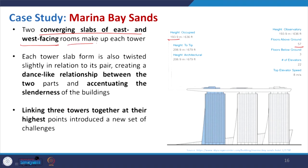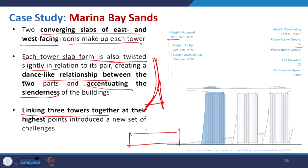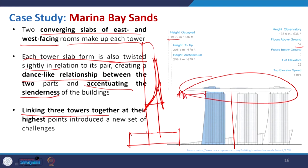In this case, two converging slabs of east and west facing rooms make up each tower. Each tower slab form is also twisted slightly in relation to its pair, giving a dance-like relationship — that is the visual aesthetic achieved with this arrangement. For stability, the arrangement is made like this where the building gets its shape — two slabs, one very straight and the other with some kind of bending, giving a support by increasing the base so that this will have better stability. This is similar to a raking shore arrangement. This also helps accentuate the slenderness of the building while giving both stability and beauty.